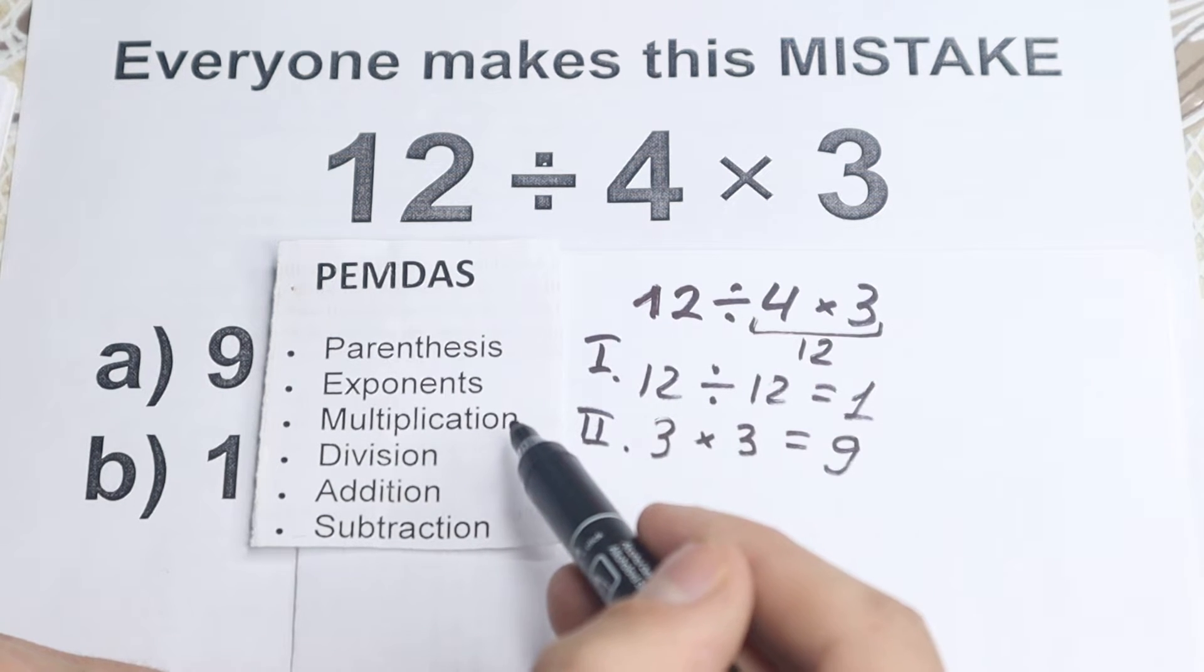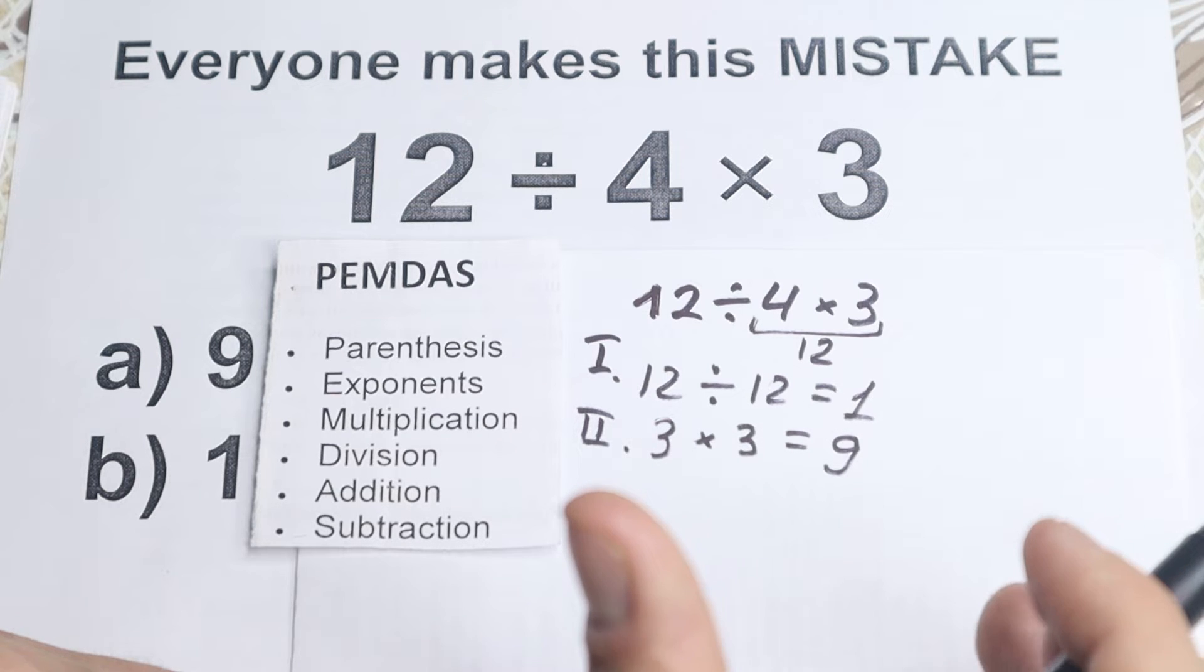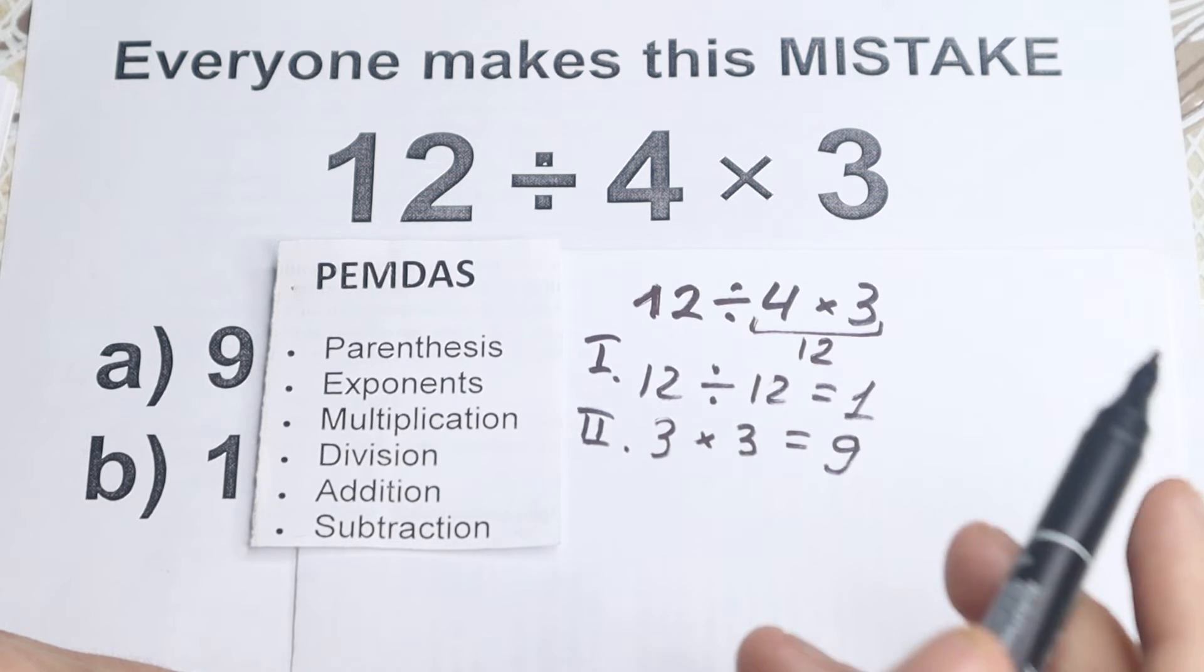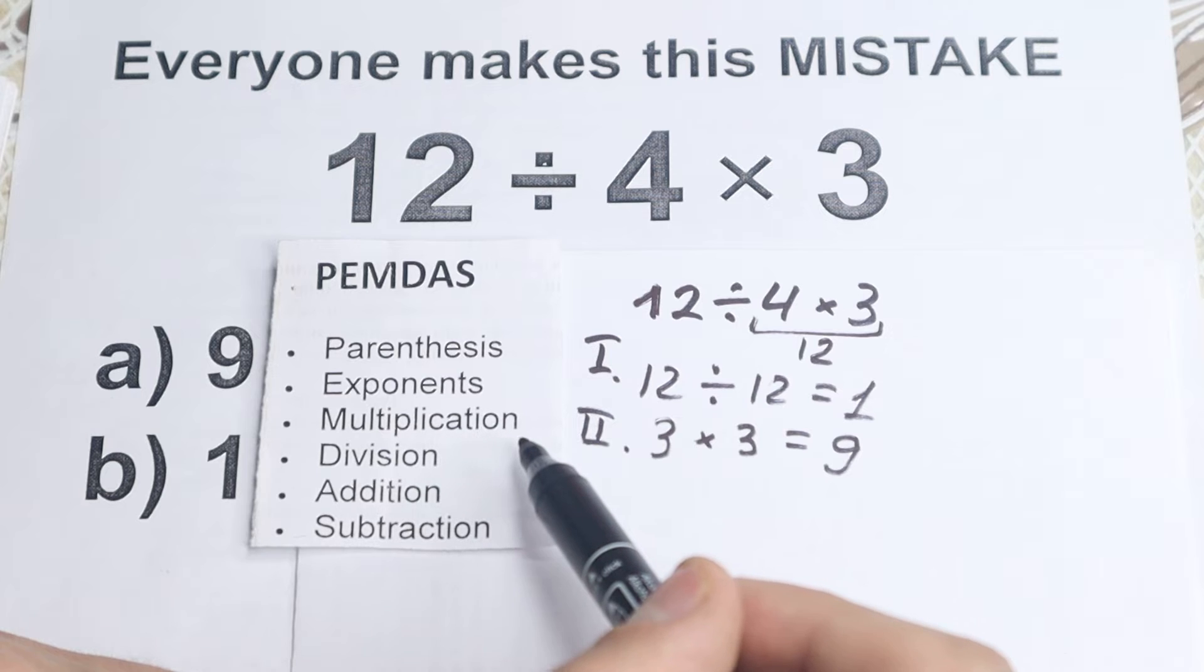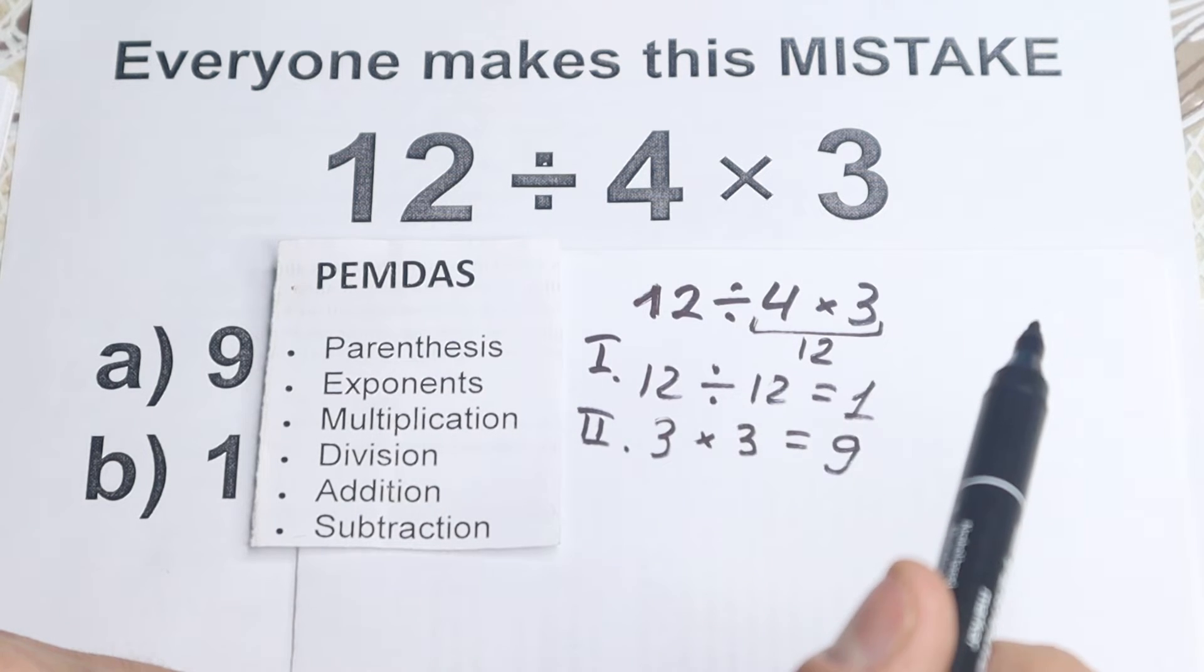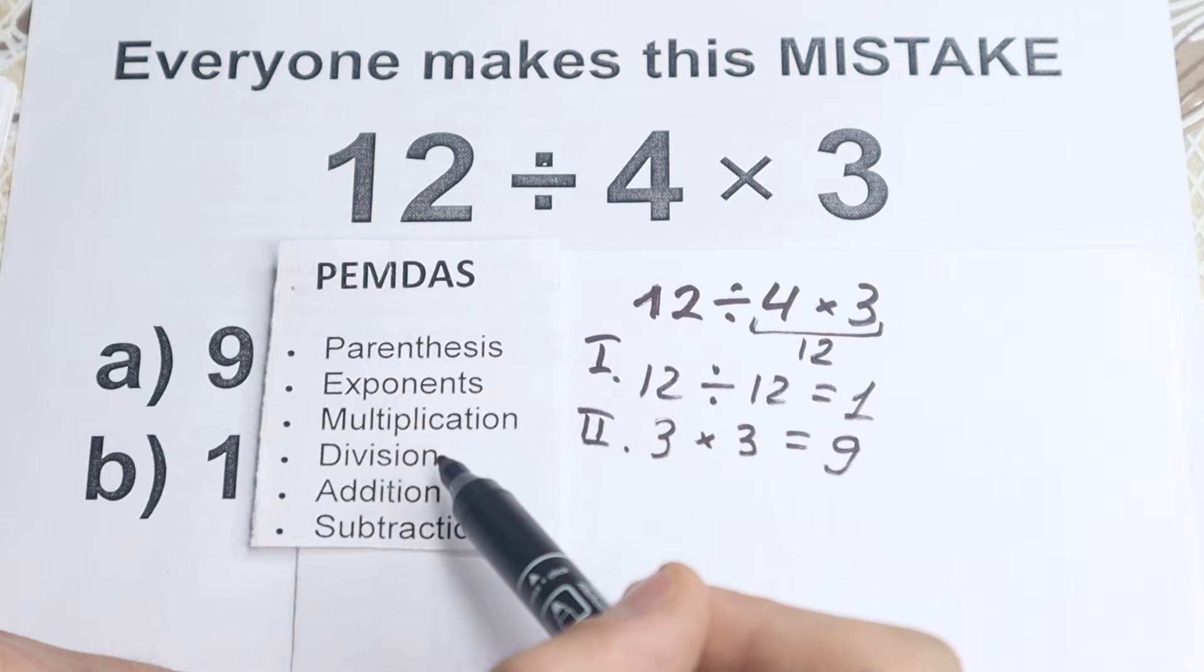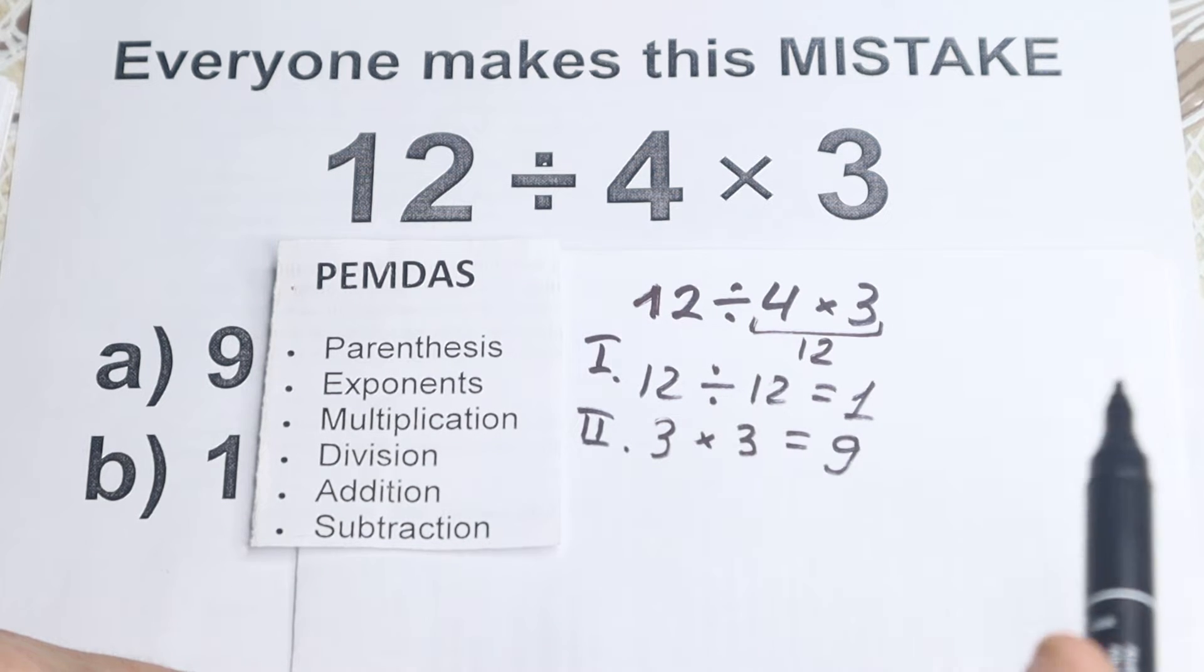Then we have the third step, multiplication. But this is a step where a lot of students do this common mistake, because they say, okay, the third step is multiplication. But one really interesting note, we have multiplication and division as one group, which is really important.